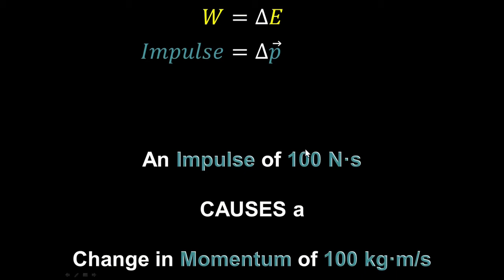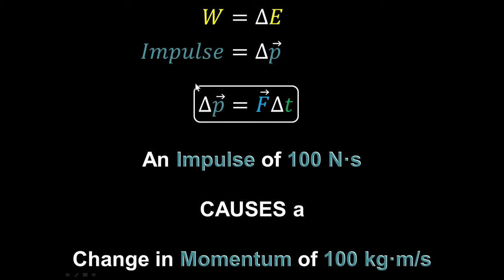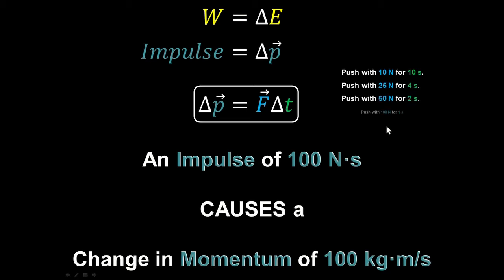If you apply an impulse of 100 newton-seconds, that causes a change in momentum of 100 kilogram meters per second. You could push with 10 newtons for 10 seconds — force times time equals 100 newton-seconds. Or 25 newtons for 4 seconds, or 50 newtons for 2 seconds, or 100 newtons for 1 second, or 200 newtons for half a second. Any of those actions is an impulse of 100 newton-seconds, causing an equal change in momentum.